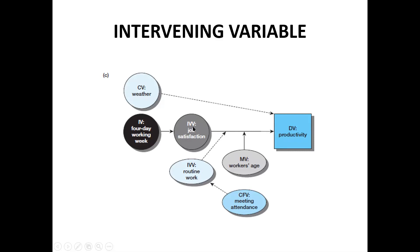Job satisfaction is an example of an intervening variable. The intervening variable is sometimes confounding. Routine work is also an example of an intervening variable.